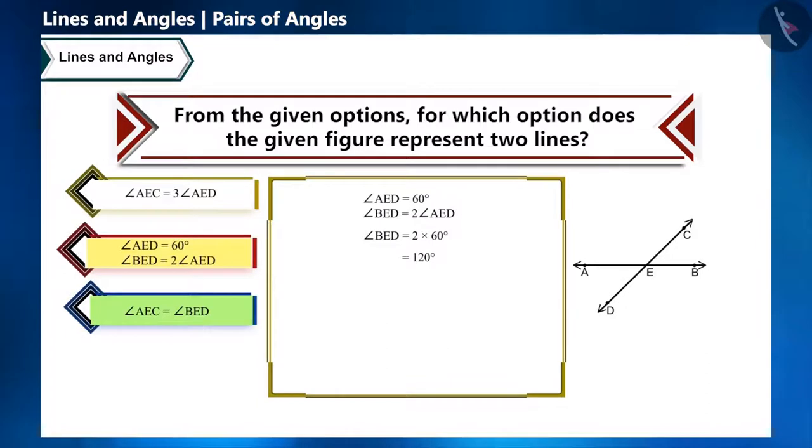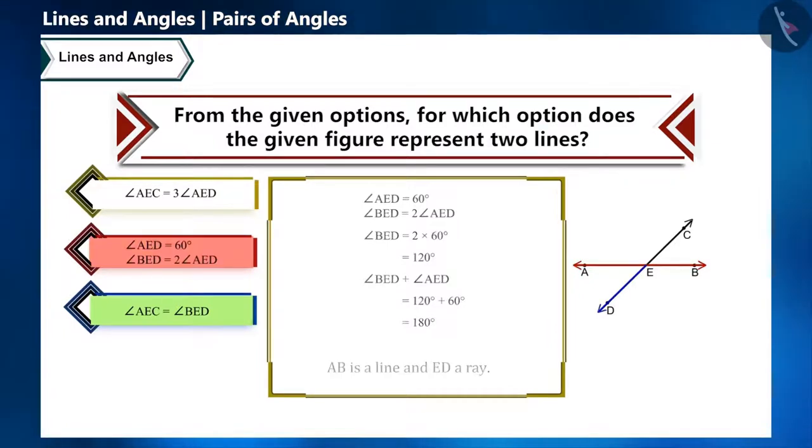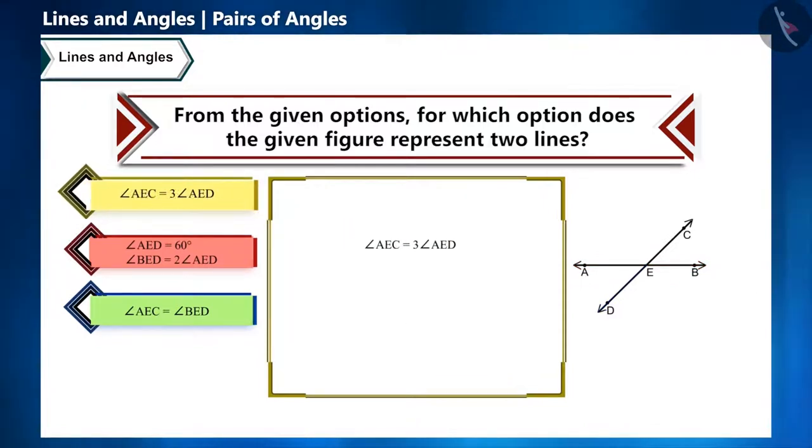Angle AED plus angle BED equals 180 degrees. From this, you come to know that AB is a line and ED is a ray. And from the first option also, it cannot be ensured that AB and CD are lines.